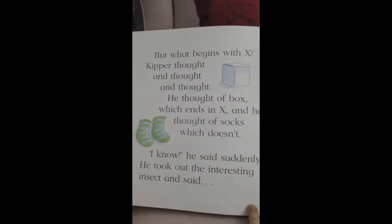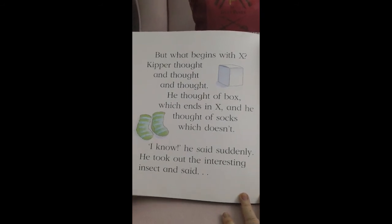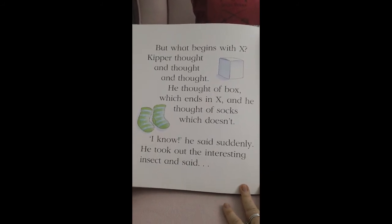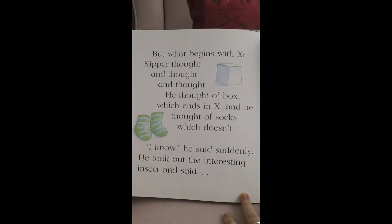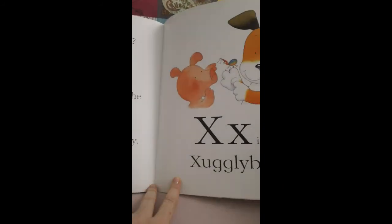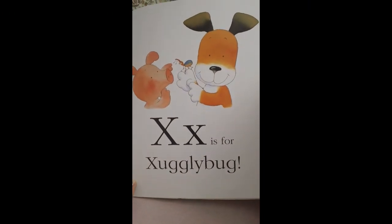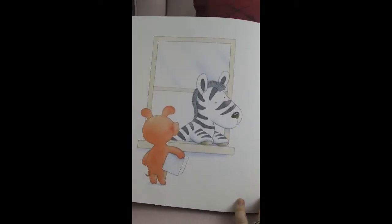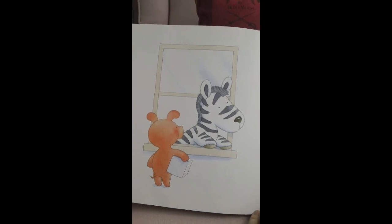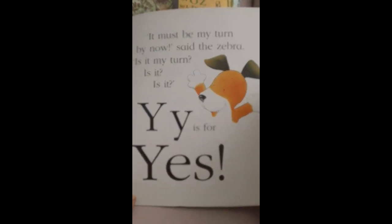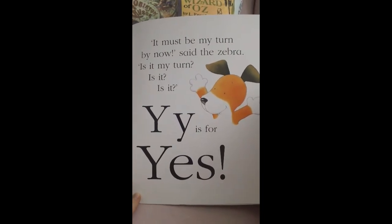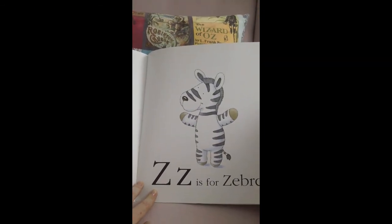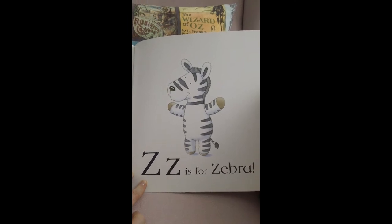But what begins with X? Kipper thought and thought. He thought of box, which ends in X, and he thought of socks, which doesn't. I know, he said suddenly. He took out the interesting insect and said, X is for six-legged bug. It must be my turn by now, said the zebra. Is it my turn? Is it? Is it? Y is for Yes. So the zebra stood in the middle of the page and we all said, Z is for Zebra.